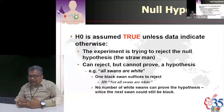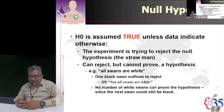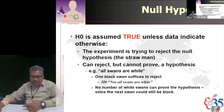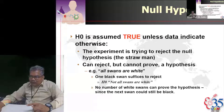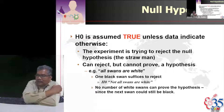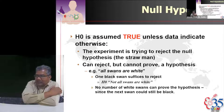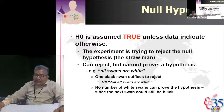For example: all swans are white. To prove that, you'd have to capture all swans. However, if you say 'not all swans are white,' then the minute you find the first black swan it is sufficient to reject the null hypothesis. One black swan suffices to reject the null hypothesis. That is the concept behind the null hypothesis.